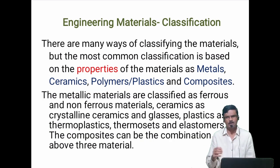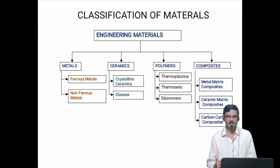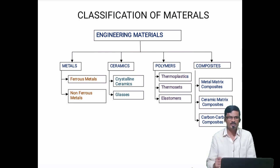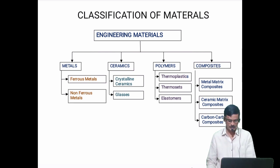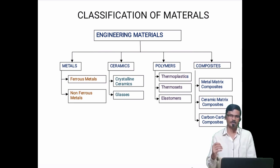Engineering materials are classified based on their properties. They are classified as metals, ceramics, polymers or plastics, and composite materials. Metallic materials are classified as ferrous materials, where iron is the main element, and non-ferrous materials, where another metal is the main element. Ceramic materials include crystalline ceramics and glasses. Polymeric materials are classified as thermoplastic materials, thermosets, and elastomers. Composite materials are classified as metal matrix, polymer matrix, ceramic matrix, and carbon-carbon composites.